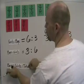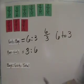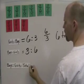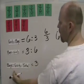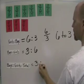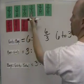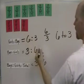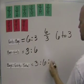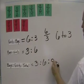And if I wanted to know the ratio of boys to girls to total, well, how many boys are there? There are three boys. How many girls are there? There are six girls. And what's the total? One, two, three, four, five, six, seven, eight, nine. The ratio is three to six to nine.